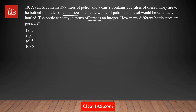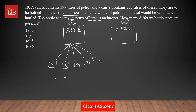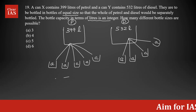Let's analyze the question one more time. You have can X containing 399 liters of petrol, and another can containing 532 liters of diesel. We are going to bottle this into bottles of equal size — let's say each bottle holds 'a' liters. Similarly, the diesel should also be bottled into the same capacity of 'a' liters. We need to find out how many possible values of 'a' exist.